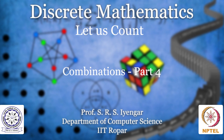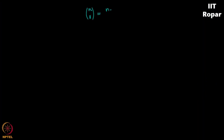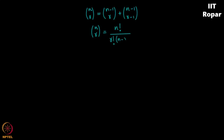We are now going to see how n choose r is equal to n minus 1 choose r plus n minus 1 choose r minus 1. This just follows from our definition of n choose r: n choose r is given by factorial n divided by factorial r times n minus r factorial.